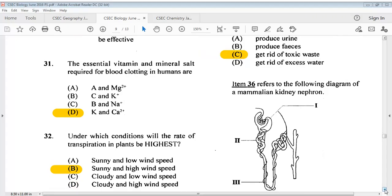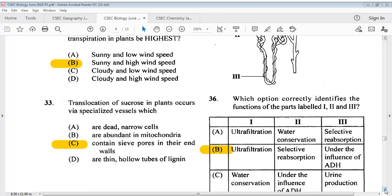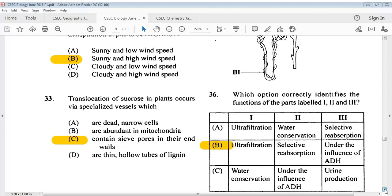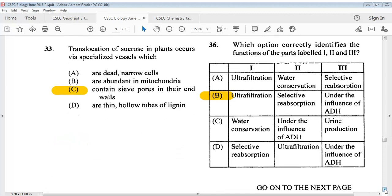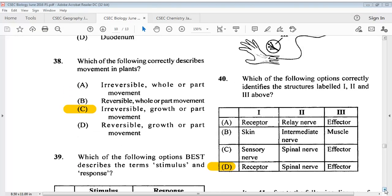For question 36, we have a diagram of a mammalian kidney nephron. It says which option correctly identifies the functions of the parts labeled 1, 2, and 3? The answer is B. For question 37, which of the following organs does the mammalian skeleton protect? The answer is A, stomach. Question 38, which of the following correctly describes the movement in plants? The answer is C, irreversible growth or part movement.